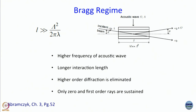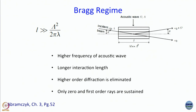Essentially you end up using a much higher frequency of acoustic wave, because L has to be greater than capital-lambda-squared divided by something — so capital lambda had better be small, and if capital lambda is small the corresponding frequency has to be large. It also helps if you have a longer interaction length. In this Bragg regime, all higher order diffractions are eliminated; only the zeroth order and first order rays are sustained — omega plus or minus capital omega.